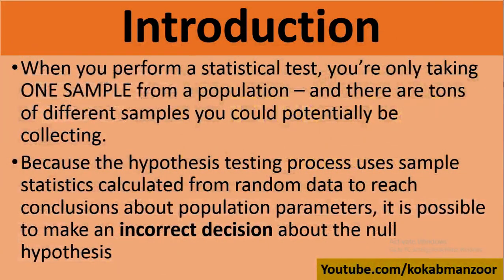جب ہم کسی population سے study کے لیے sample لیتے ہیں، تو وہ ایک تنہا واحد sample نہیں ہوتا۔ ہم نے جو sample لیا اور اس پر test run کیا، ممکن ہے کہ کوئی اور sample لیتے تو result مختلف آتا اور population کو زیادہ بہتر طریقے سے represent کرتا۔ اگر ایسا ہوا، تو آپ کسی غلط فیصلے پر پہنچے — یعنی there is some kind of incorrect decision۔